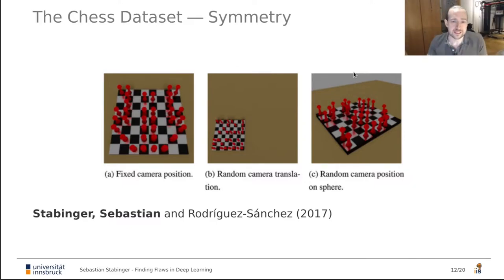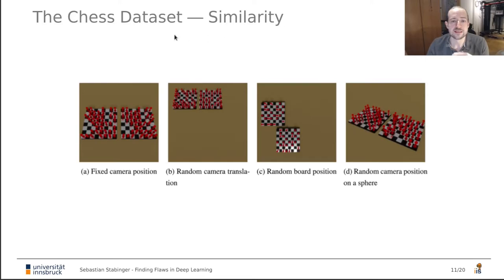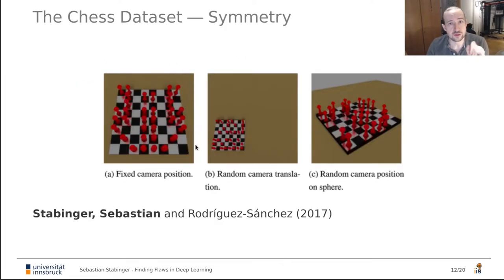And the results on this data set replicate what we have seen on the SVPD data set. Both of these problems are not trivial to solve for deep learning systems. But the similarity task is a lot more difficult than the symmetry task. And we were able to publish this at CVPR.